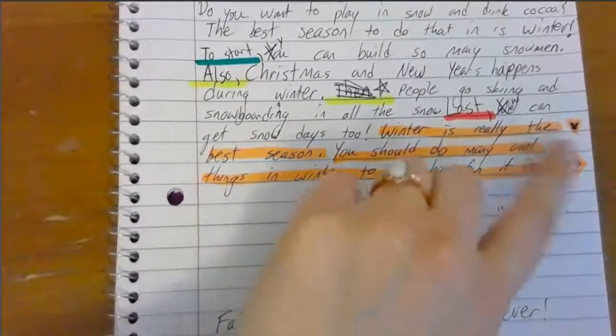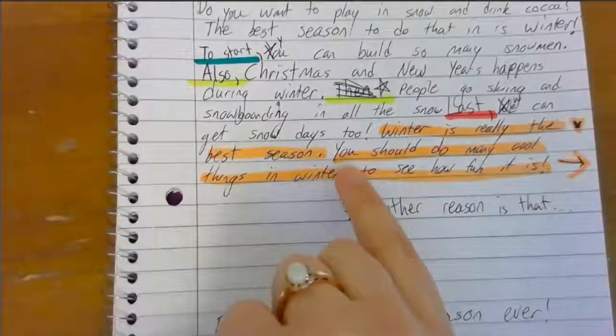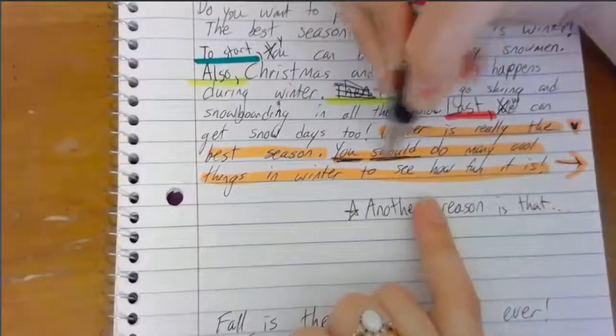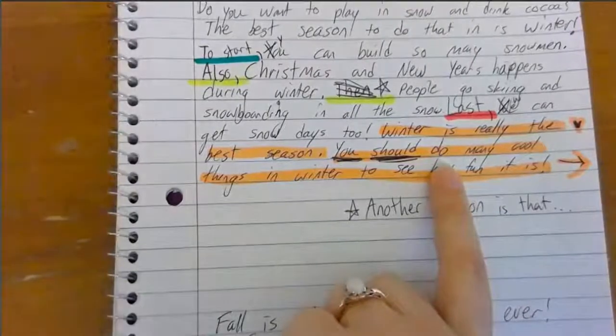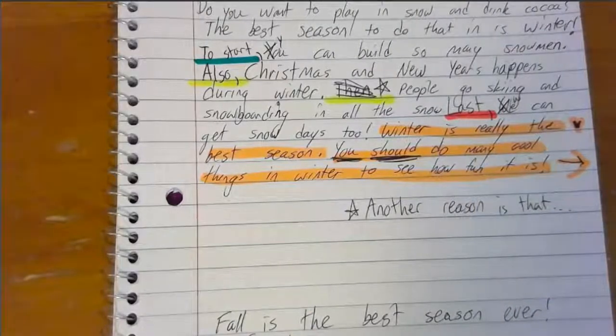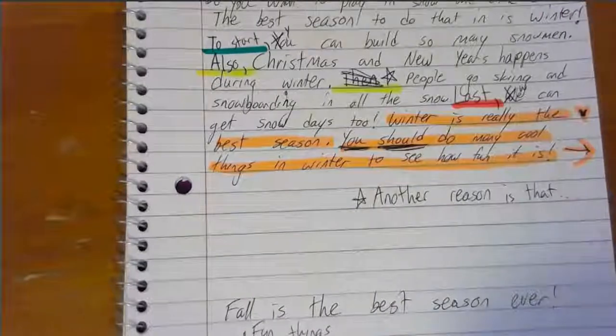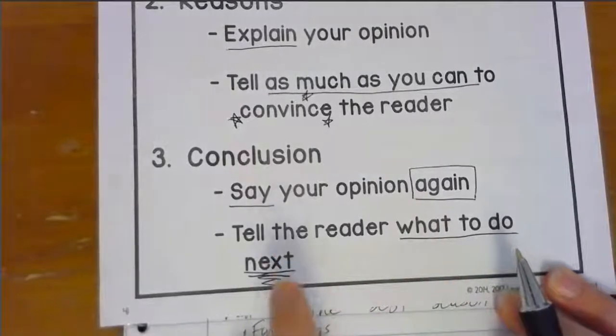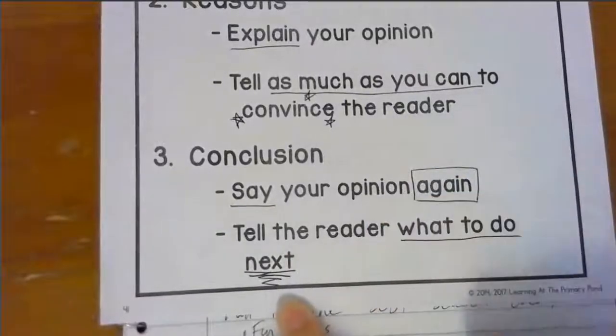So let's go over this again with my conclusion. Winter is really the best season — that's my opinion. You should — I'm going to underline those two important words — 'you should' — do what? That is what you are going to decide for your conclusion. Remember, a conclusion has two parts, so you will need two sentences: a sentence to say your opinion again, then a sentence to tell the reader what to do next. Show me what you've got in your amazing conclusions!